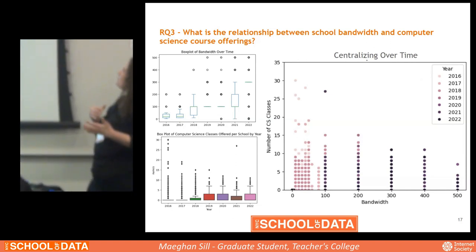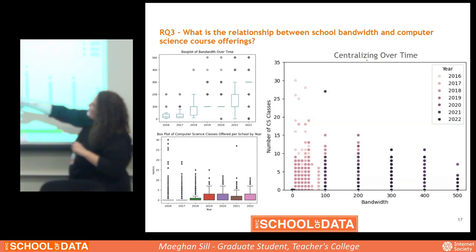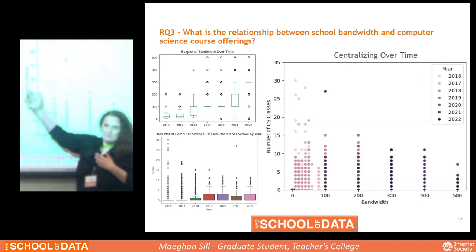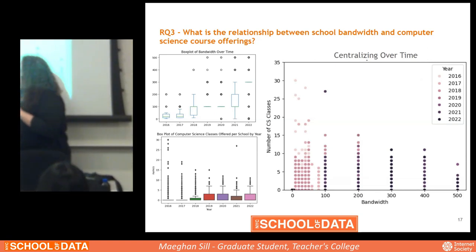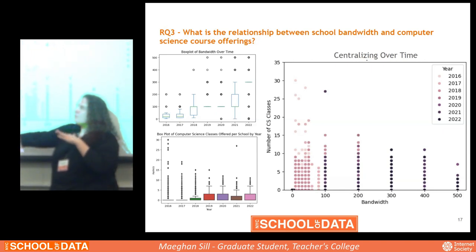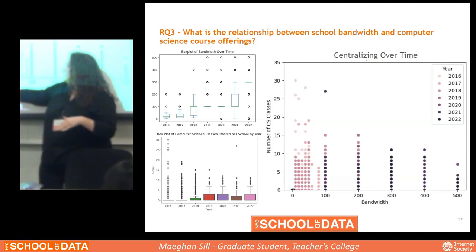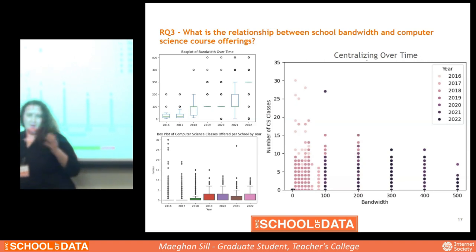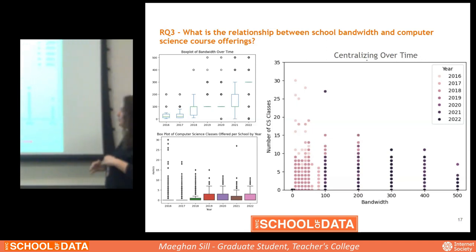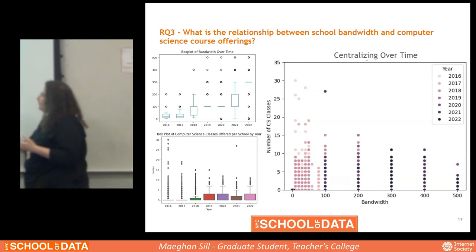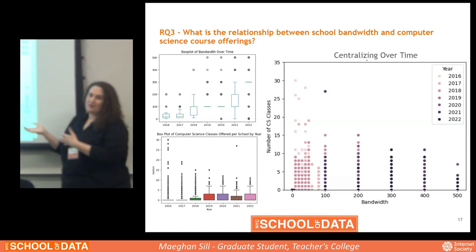The next research question was about the relationship between the bandwidth that a school has and their computer science course offerings. Since the program started, there's been a steady increase in bandwidth schools have over time. Schools on average have about 300 megabytes per second of bandwidth. We included all schools, even ones that didn't offer computer science. The range of CS classes offered per school year is increasing — the first two years almost everybody didn't offer CS, and now about 75% of schools offer somewhere between zero and three CS classes, but there are still many schools not offering computer science at all. This chart shows that bandwidth and computer science course offerings didn't really have a correlation.